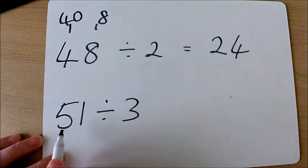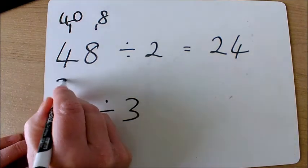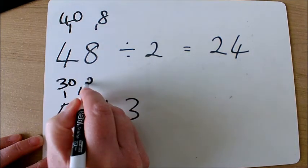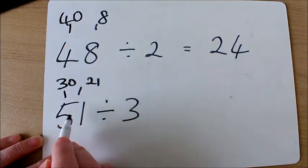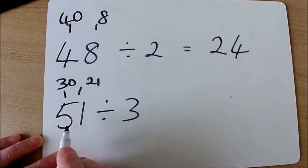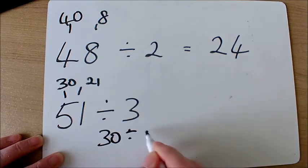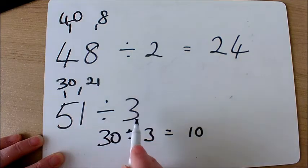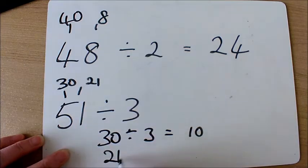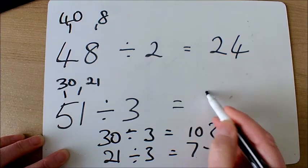30 and 21 add up to 51. 30 divided by 3 equals 10, 21 divided by 3 equals 7. If I add these two together, the answer comes to 17.